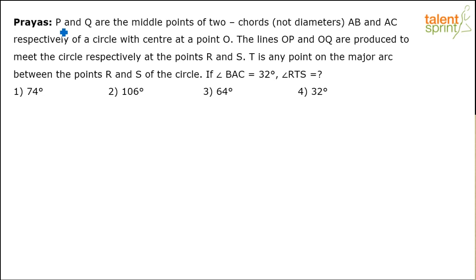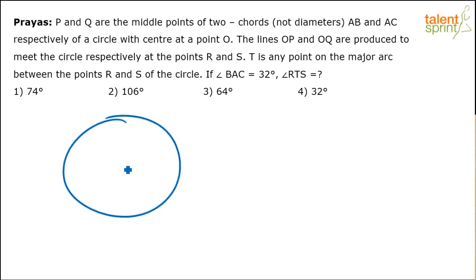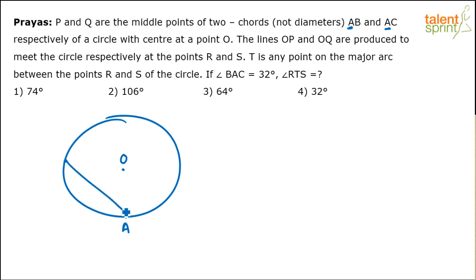P and Q are the middle points of two chords AB and AC respectively of a circle with center at point O. Let's consider a circle with center O. A is a common point for both chords, so both chords originate from point A. AB is one chord and AC is the other. Make sure these are not diameters — the problem states that these are not the diameters.